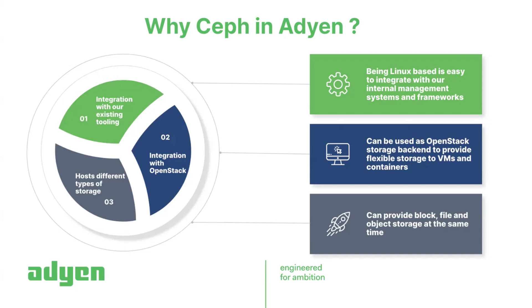Second, the integration with OpenStack. The integration between Ceph and OpenStack is very great. Not only as a block backend storage — we can use Ceph with OpenStack to provide object storage or file storage. Normally people use only RBD, but it's possible to use file storage and object storage with OpenStack via the Swift API or S3 API.